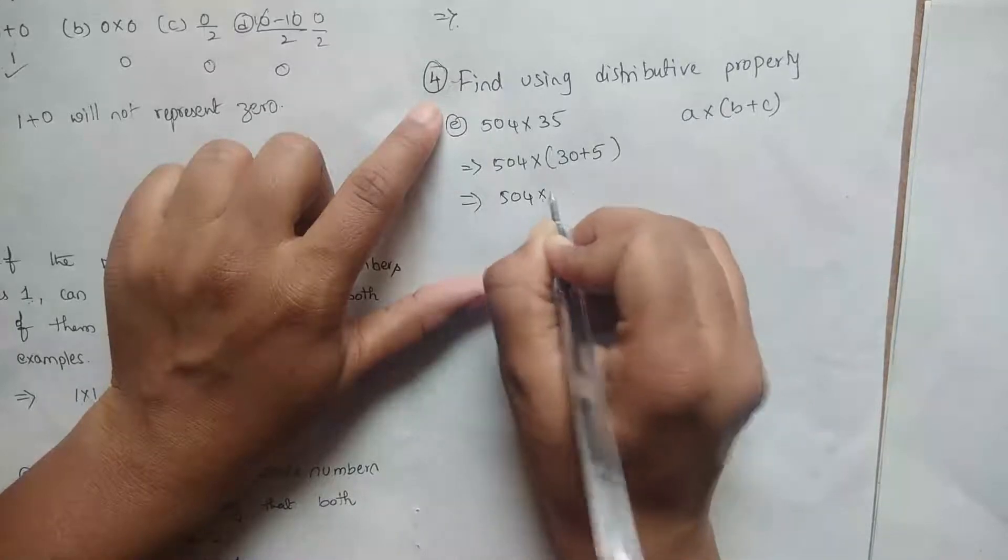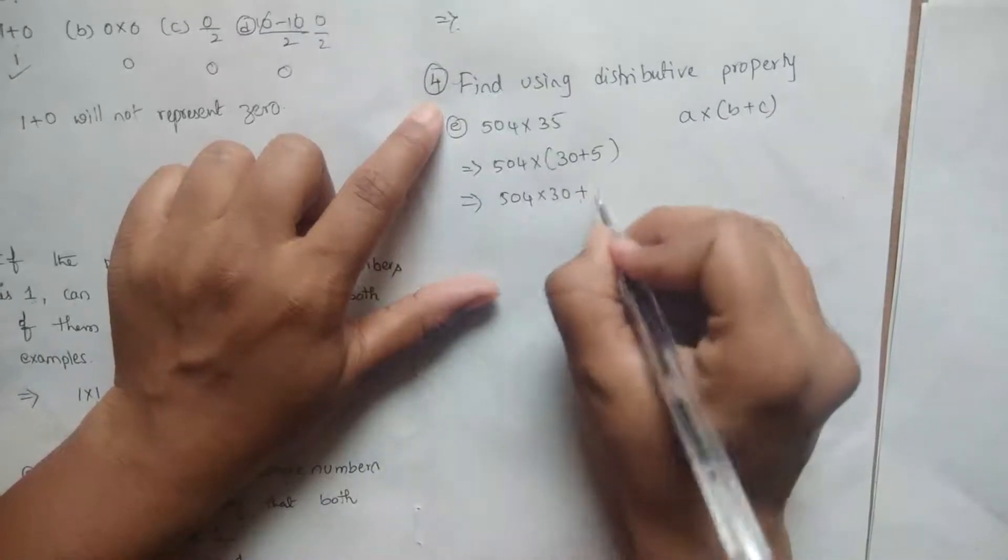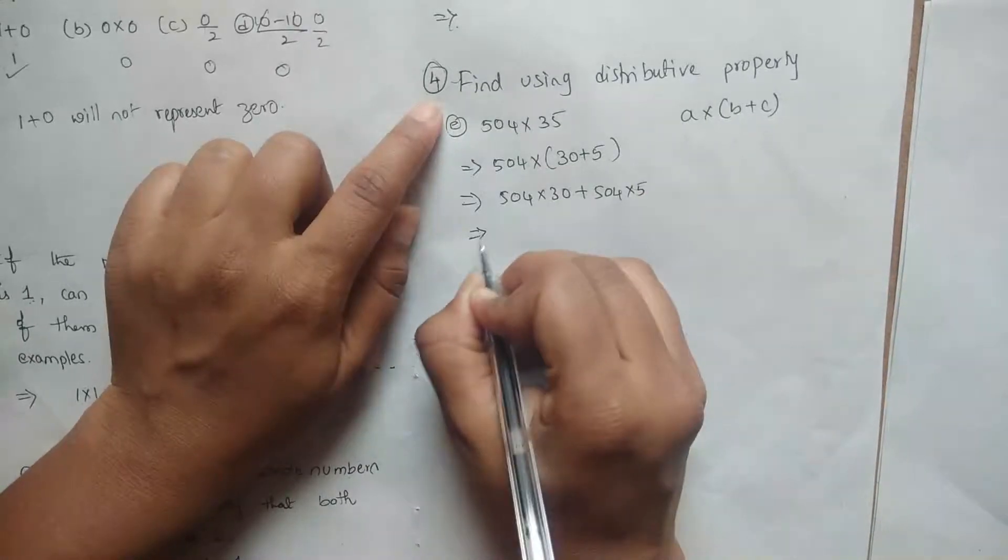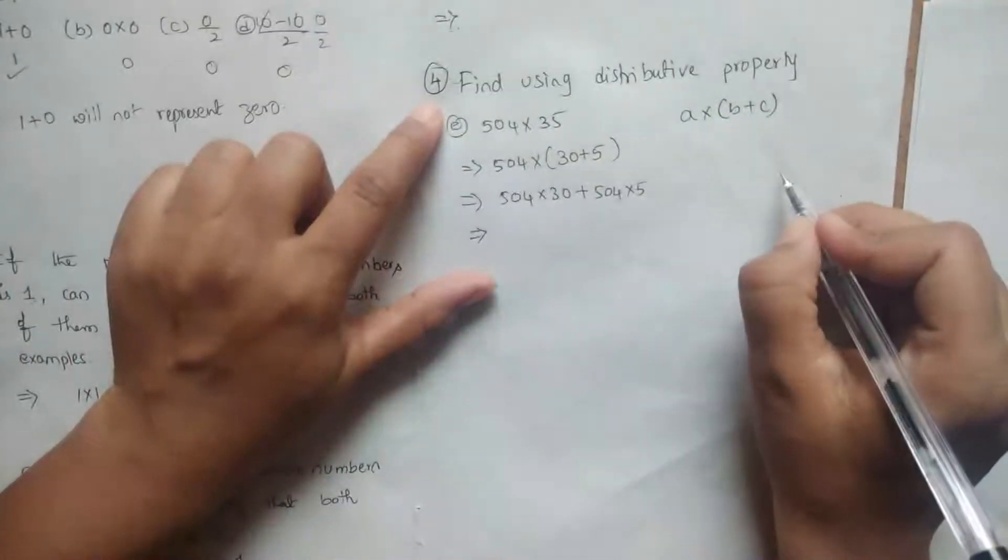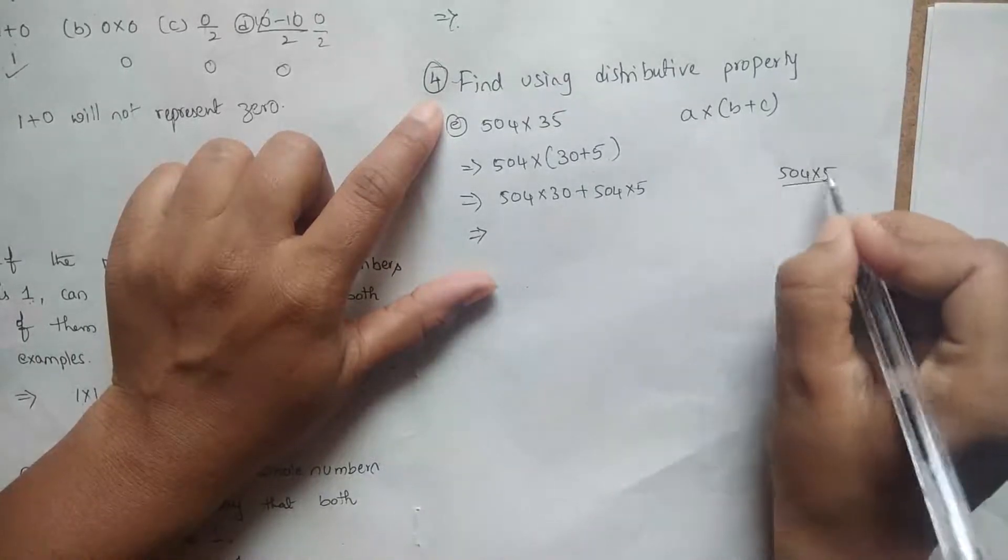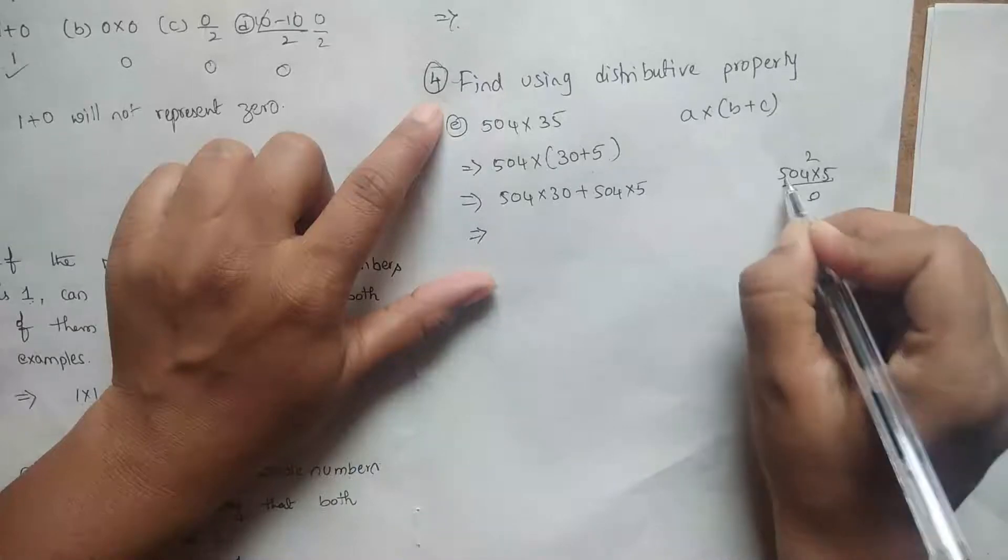504 into 30 plus 504 into 5. Here 504 into 5: 5 4s are 20, 5 0s are 0, 5 5s are 25. So here 2520.